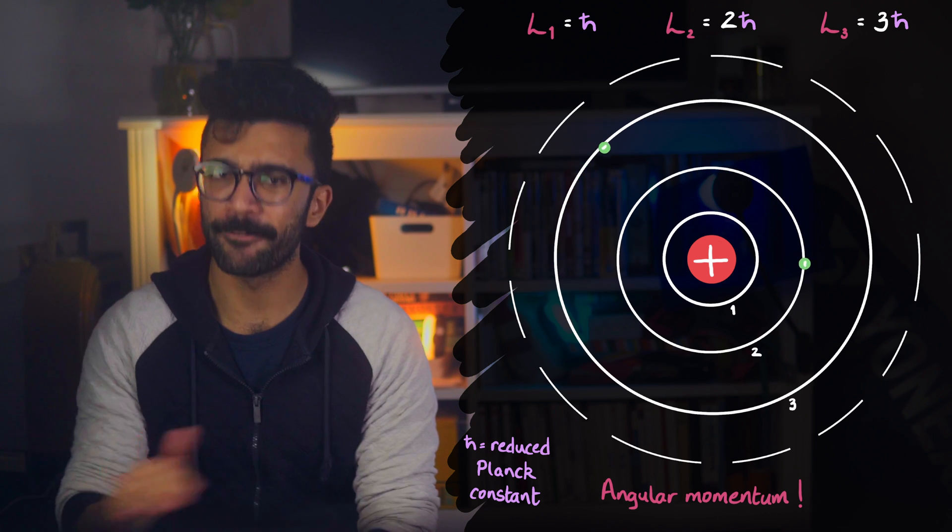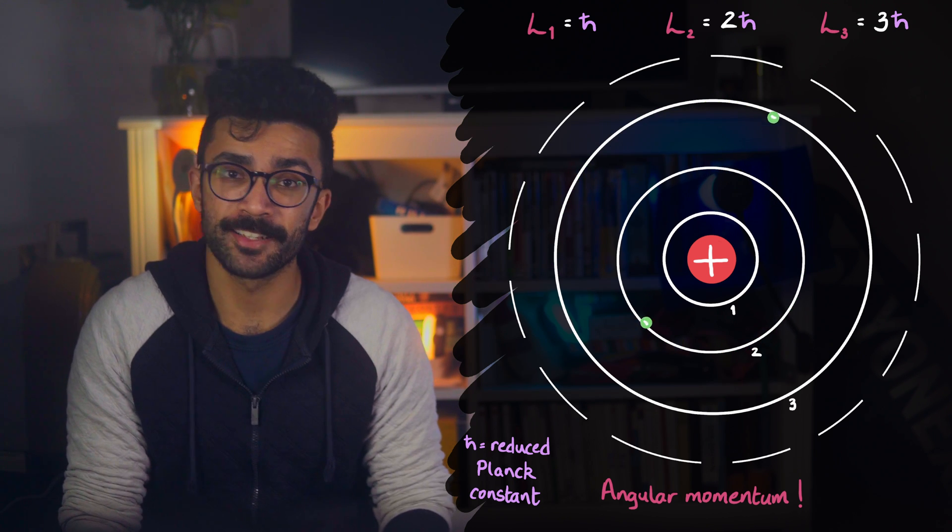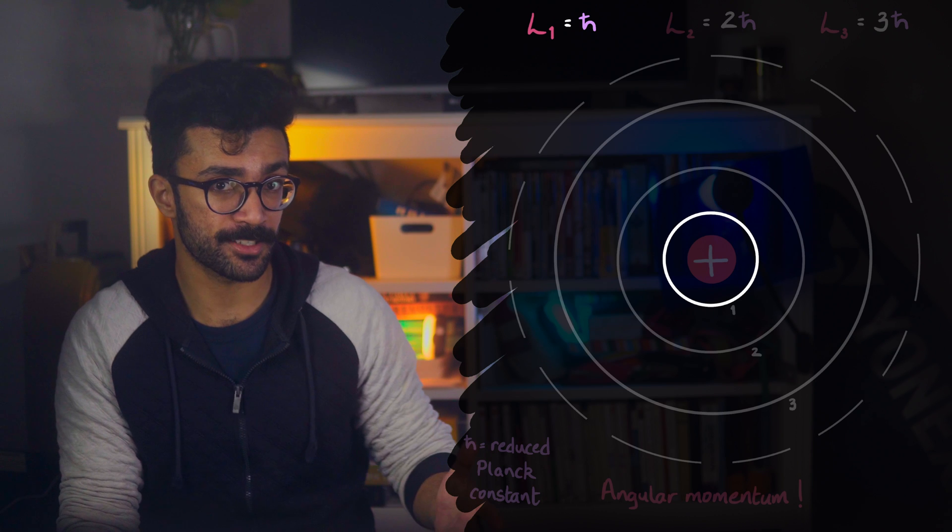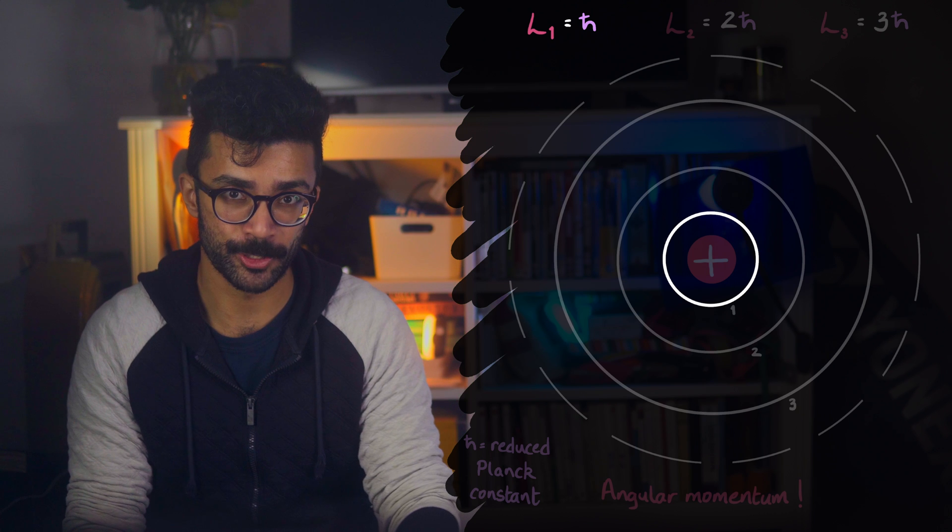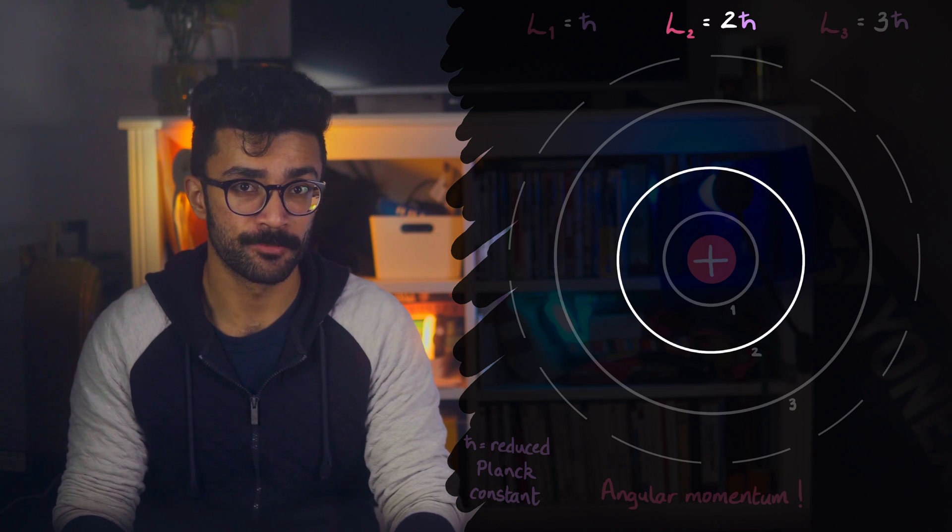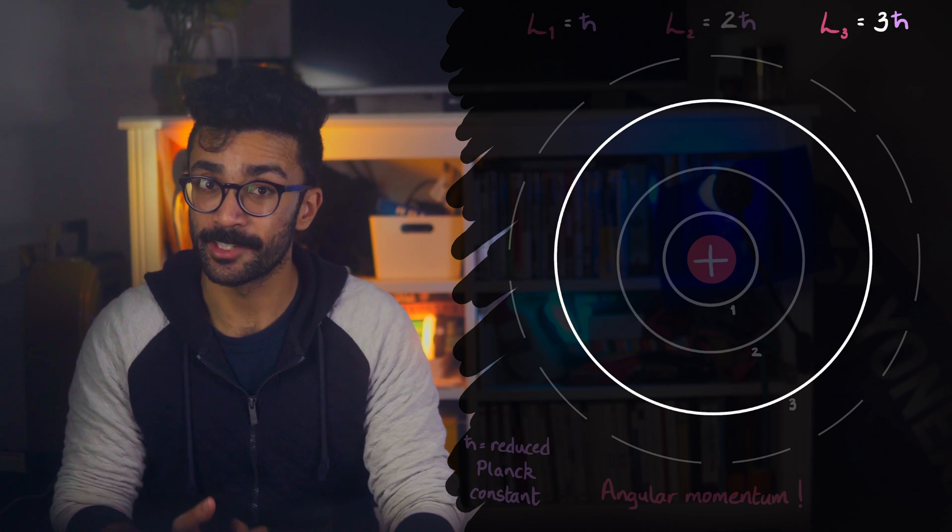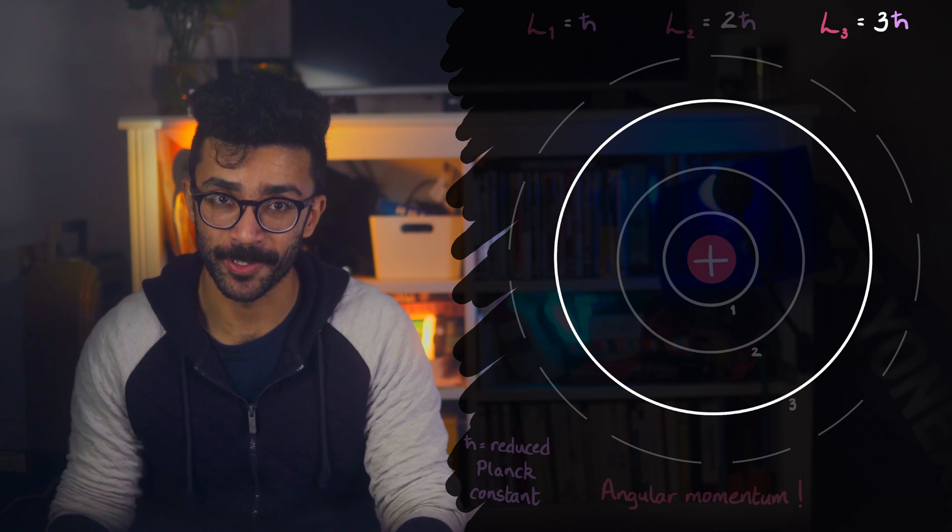And it must have been really exciting for him to realise that in the first energy level, the angular momentum of the electron was equal to h-bar, the reduced Planck constant. In the second it was two times h-bar, in the third it was three times h-bar, and so on.